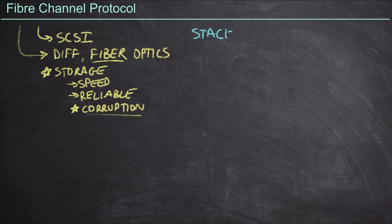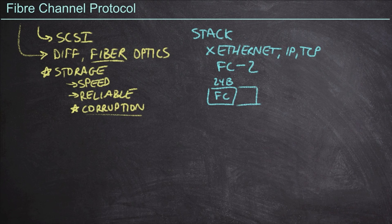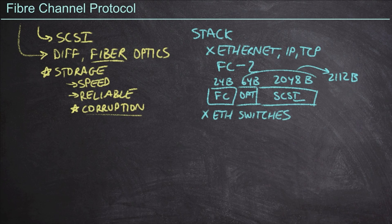Fiber Channel is going to use its own protocol stack — it is not at all compatible with Ethernet. We're not relying on Ethernet, IP, TCP, UDP, or anything like that. Instead, it has its own layers represented as FC followed by a dash and a number. For example, FC-2 represents layer 2 of the Fiber Channel stack. Fiber Channel follows its own frame format with its own 24-byte header, a 64-byte optional header field, and a 2,048-byte payload, resulting in 2,112 bytes total. This is where SCSI messages end up. Because it uses its own stack, we cannot use traditional Ethernet switches — we need our own Fiber Channel switches and Fiber Channel hardware.